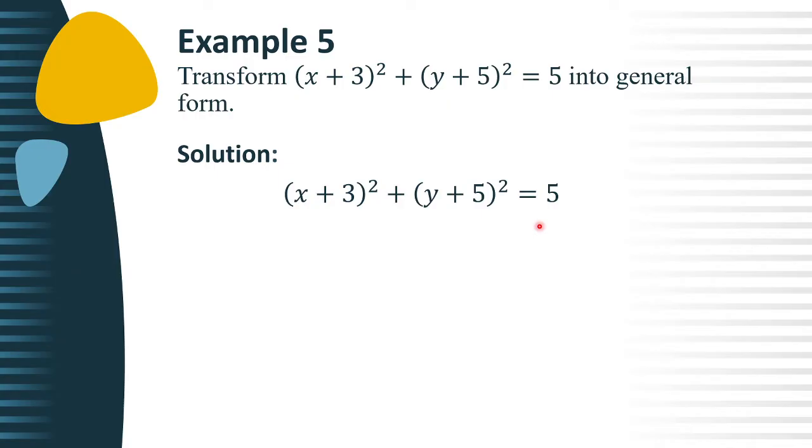Our first step is to apply the square of binomial for (x + 3)² and (y + 5)². Square the first term, we have x². Then twice the product of the first and last terms: 3x times 2, that is 6x. Then last, square the last term: 3² equals positive 9.